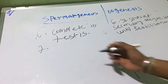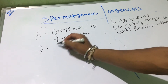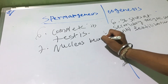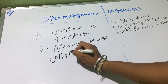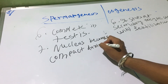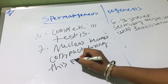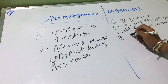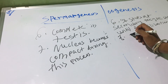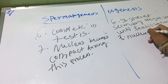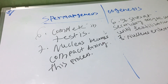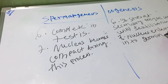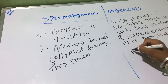The seventh point: in case of spermatogenesis, the nucleus becomes compact during this process. And in case of oogenesis, the nucleus enlarges into germinal vesicles in the ovum.